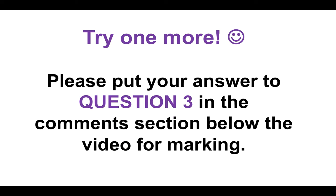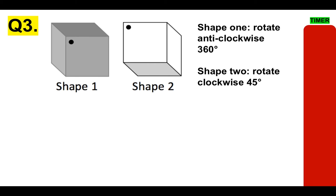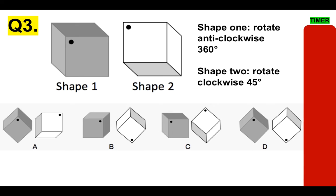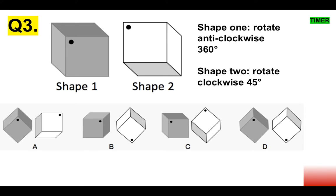Let's have a go at one more. Please put your answer to question 3 in the comments section below, and then we'll move on to another type of IQ and aptitude test question. Here it is: SHAPE 1 in that position, SHAPE 2 — this is a little bit tougher. SHAPE 1, you have to rotate anti-clockwise 360 degrees. But SHAPE 2, you have to rotate it clockwise 45 degrees — so think about that. Is it A, B, C or D? Please put your answer to question 3 in the comments section below for marking.